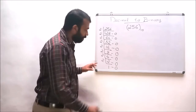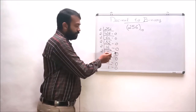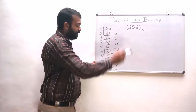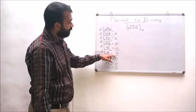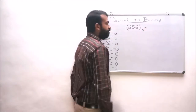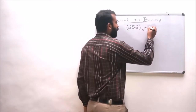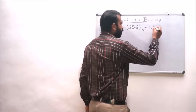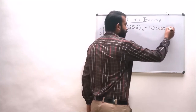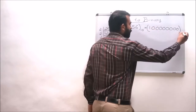The final answer is 1 followed by 8 zeros. So the number 256 to base 10 can be written as 1, 0, 0, 0, 0, 0, 0, 0, 0 to base 2.